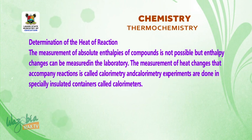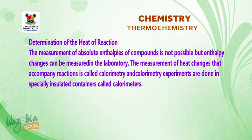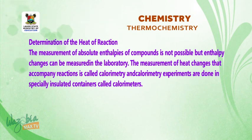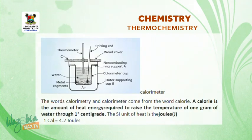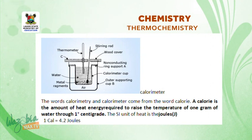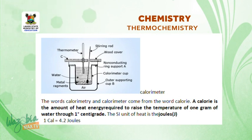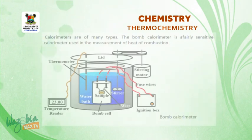We go on to determination of heat of reaction. The measurement of absolute enthalpy of a compound is not possible, but enthalpy changes can be measured in the laboratory. The measurement of heat changes that accompany reactions is called calorimetry, and calorimetry experiments are done in specially insulated containers called calorimeters. The word calorimetry and calorimeter come from the word calorie. A calorie is the amount of heat energy required to raise the temperature of one gram of water through one degree centigrade. The SI unit of heat is joules; one calorie equals 4.2 joules.